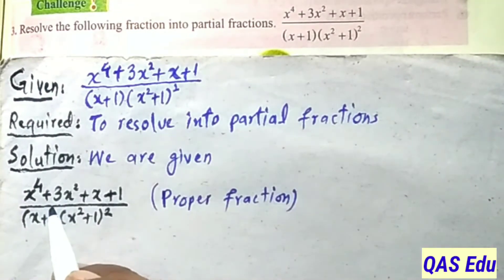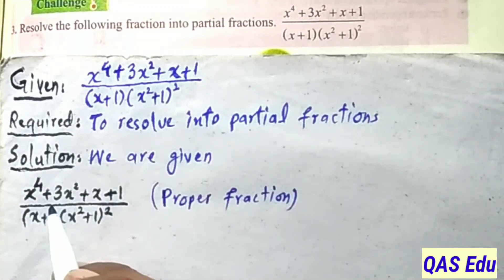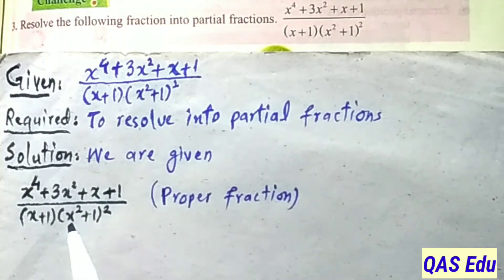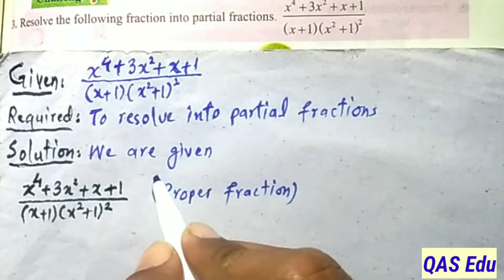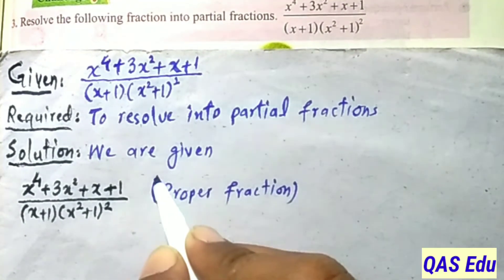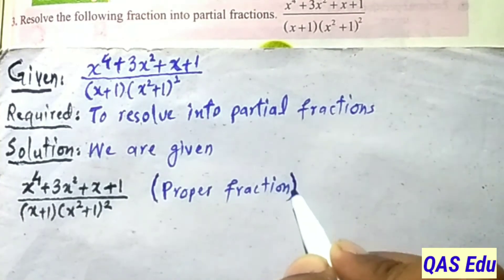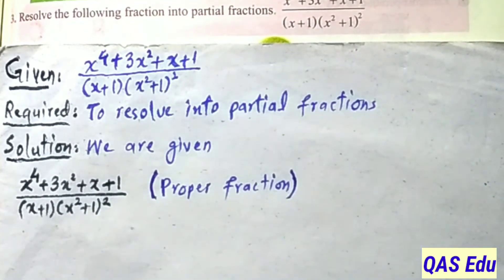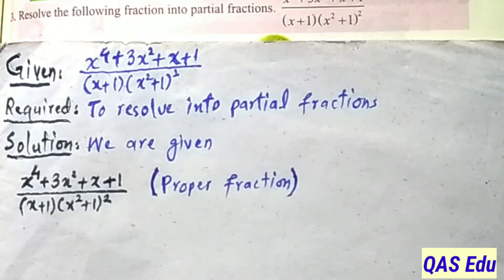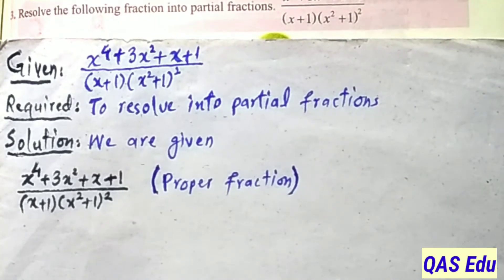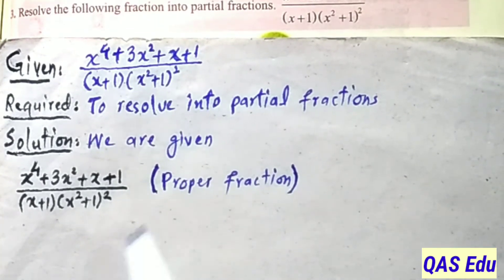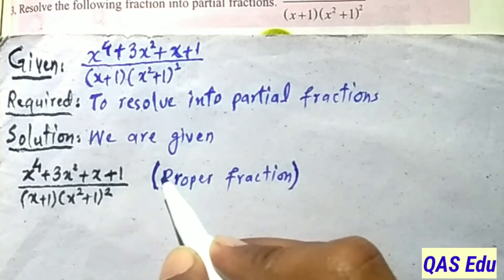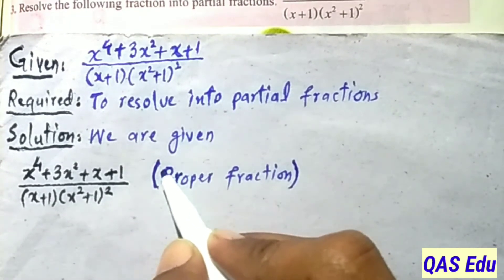In the case where the numerator degree equals or exceeds the denominator degree, this is an improper fraction. Improper fractions cannot be directly converted to partial fractions. We must first convert it to a proper fraction. To do that conversion, we perform division.